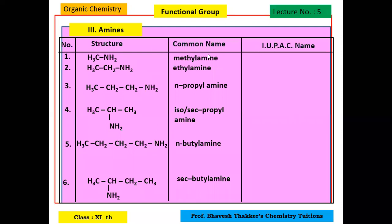IUPAC name for amines: NH₂ is called the amino group in organic chemistry. CH₃ is methyl and NH₂ is amine. The common name is methylamine. In IUPAC, we add the alkane name to 'amine.' This is a methane derivative, so the IUPAC name is methanamine. With 2 carbons, it becomes ethanamine.